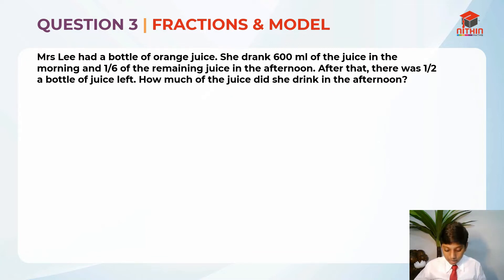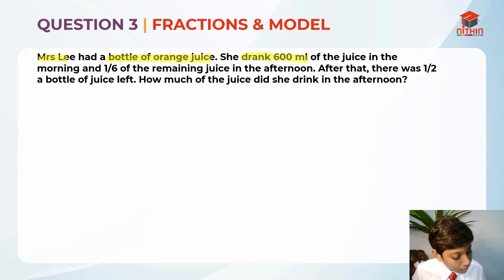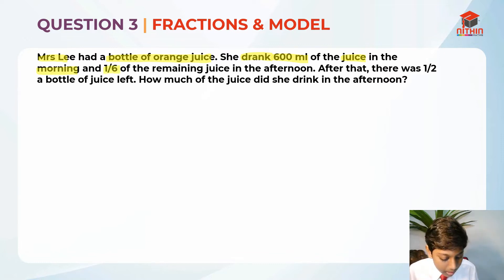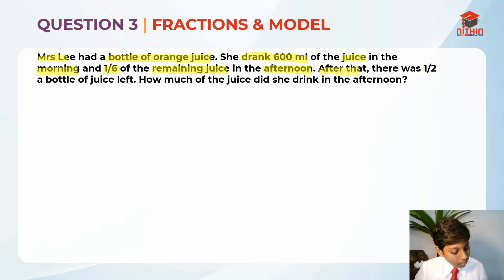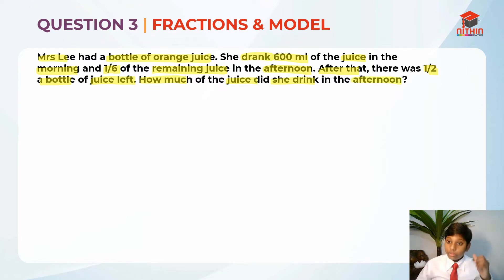Now that we've read the question, let's highlight the key information. Mrs. Lee had a bottle of orange juice. She drank 600ml of the juice in the morning, and 1/6 of the remaining juice in the afternoon. After that, there was half a bottle of juice left. They're asking us how much of the juice did she drink in the afternoon.